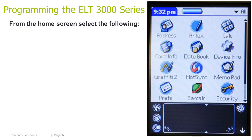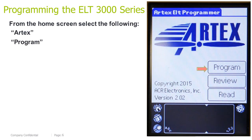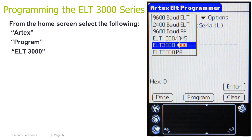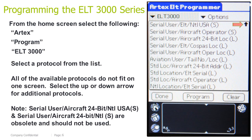Programming the ELT 3000 Series ELT. From the home screen, select the following: Artex Program ELT 3000. Select a protocol from the list. All the available protocols do not fit on one screen; select the up or down arrow for additional protocols. Note: Serial User Aircraft 24-bit National USA Short and Serial User Aircraft 24-bit National Short are obsolete and should not be used.